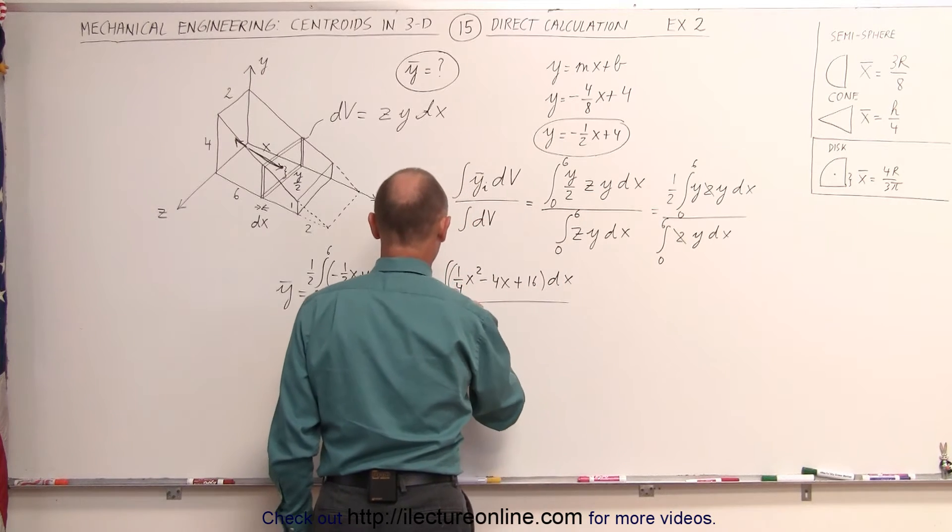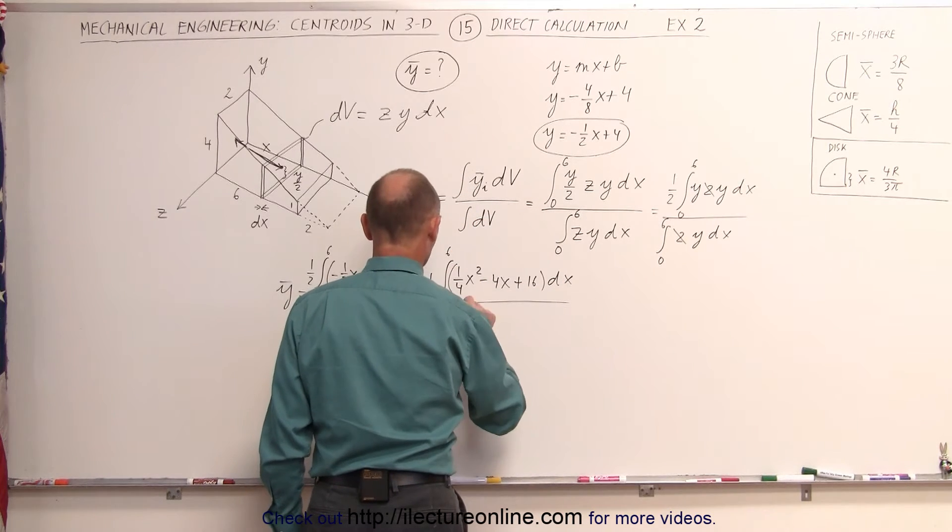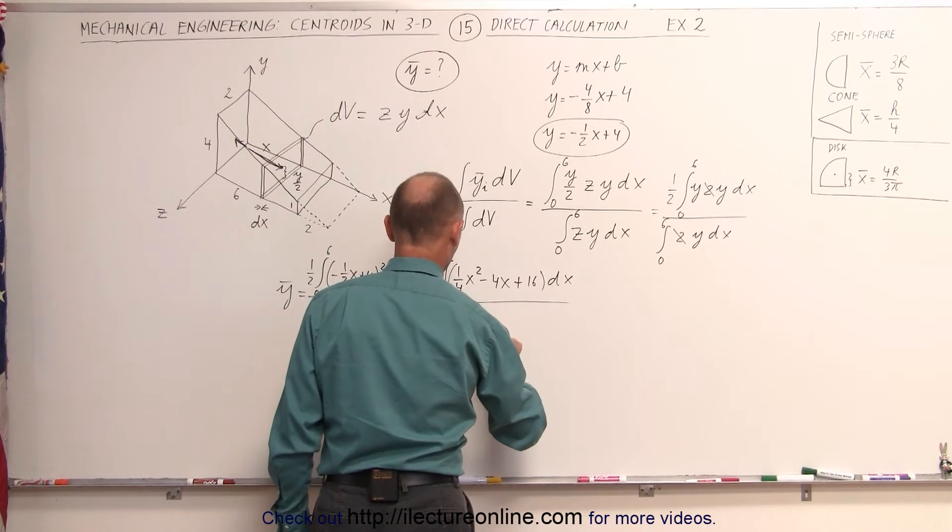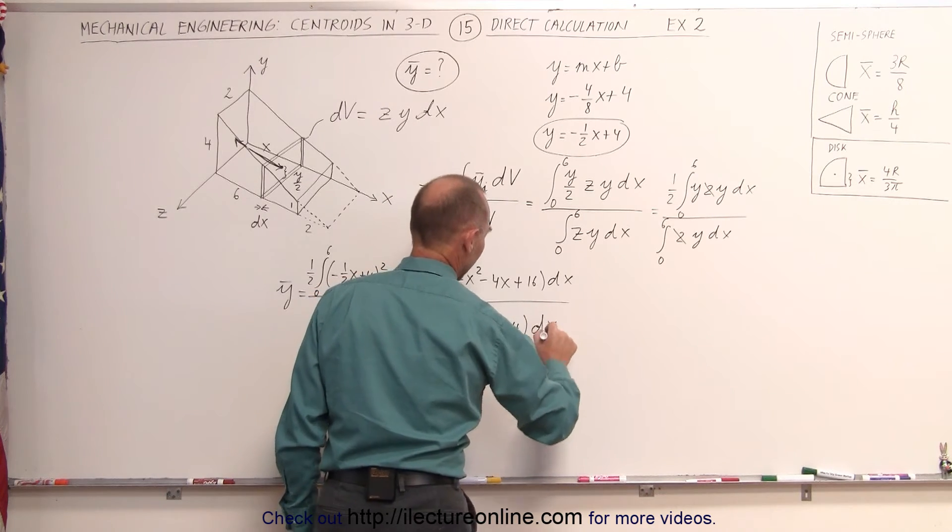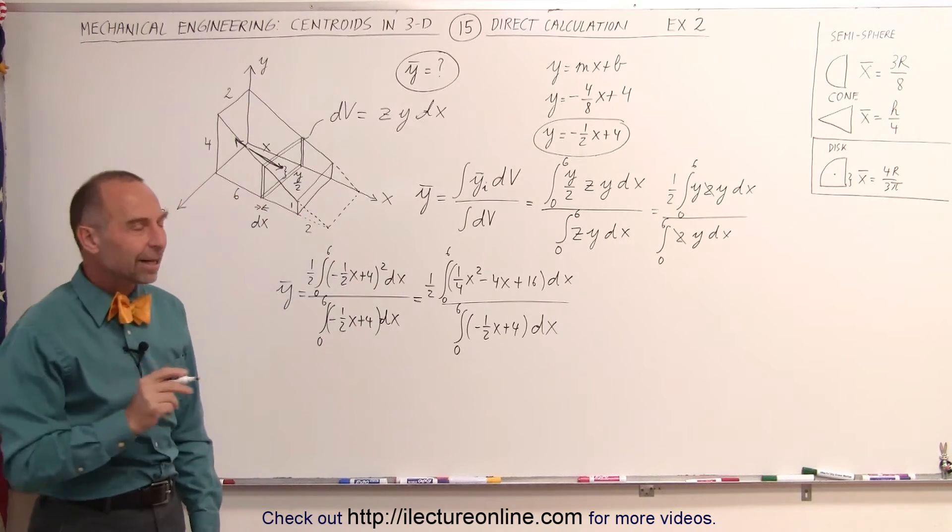And divide that by the integral, 0 to 6, 0 to 6, of minus one-half x plus 4 times dx. And now finally have it into a form I can integrate, both the numerator and the denominator.